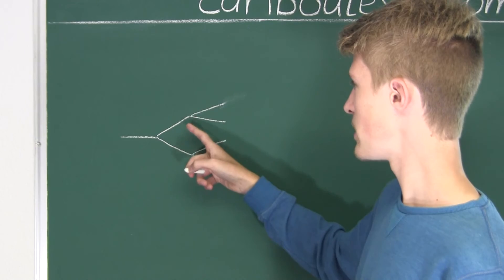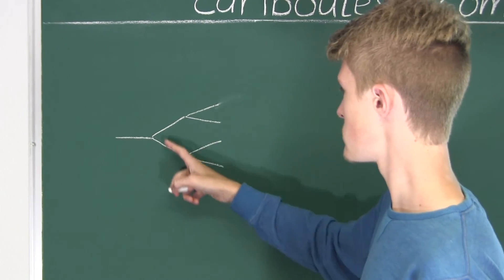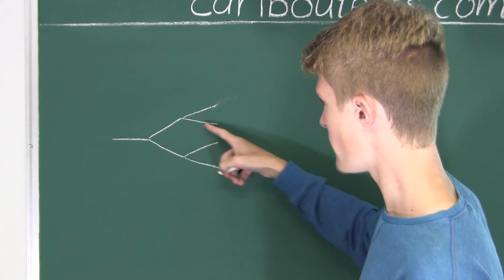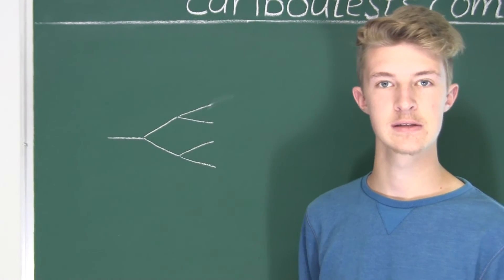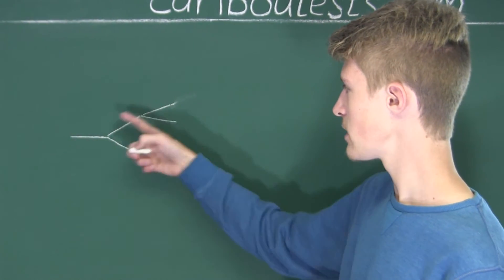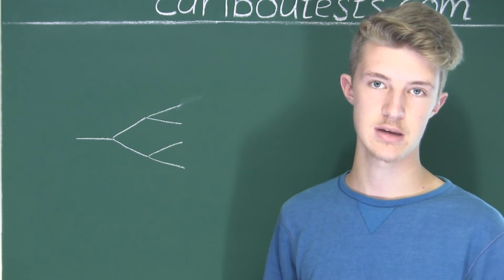And then we know that each of those two branches split into two more each. So we have already three, four, five, six, seven. And since we know that they were all one meter, the total length of all these branches must be seven meters.